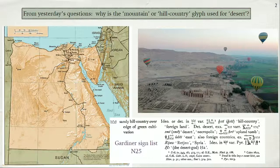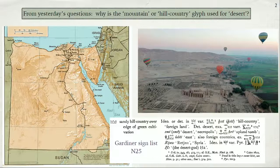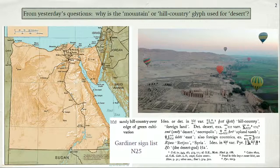I wanted to start with a follow-up on a question that came up yesterday about this particular glyph, which I pointed out is used for words relating to both desert but also mountain or hill country. I didn't talk that much about geography since it's just a three-lecture course, but it's a good reminder that geography matters. Anytime you study a different country, a different culture, a different language, the geography has a huge impact on how we look at, talk about, and think about the world. I wanted to give you these images to show you a little bit about the geography of Egypt.